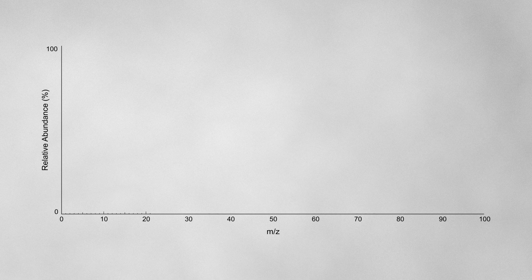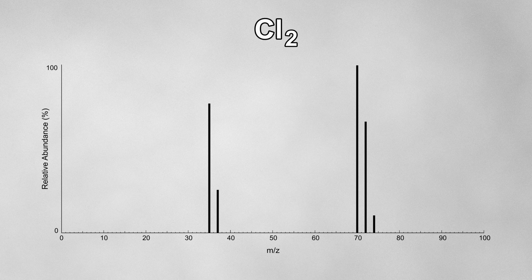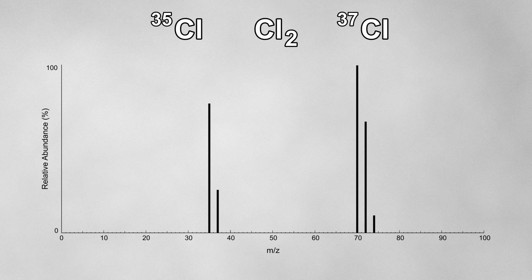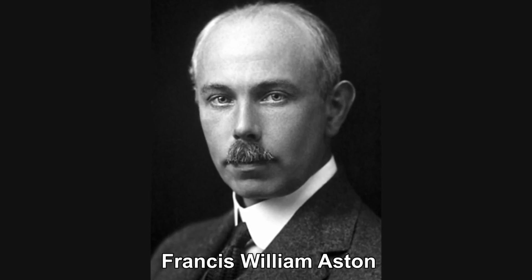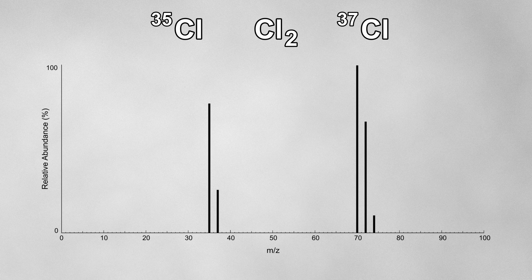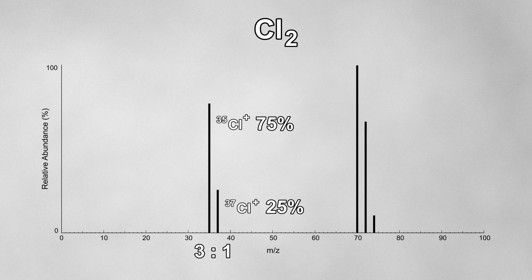Now let's start looking at some spectra. As each cation hits the detector it generates a small current which produces a peak — the more cations hitting at the same time, the larger the peak. This is the mass spectrum for chlorine, Cl₂. Chlorine exists in two naturally occurring isotopes: chlorine-35 and chlorine-37. Mass spectrometry was instrumental in discovering isotopes — Francis William Aston won the Nobel Prize in Chemistry partly for this in 1922. We can see peaks at m/z ratios of 35 and 37 showing the two isotopes, in a 3 to 1 ratio, telling us that 75% of chlorine atoms are chlorine-35 and 25% are chlorine-37. From this we can calculate the relative atomic mass seen in the periodic table.